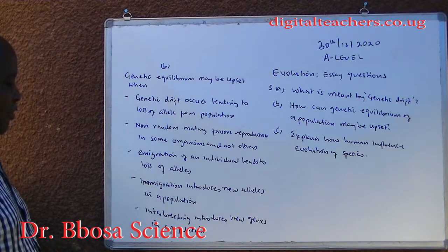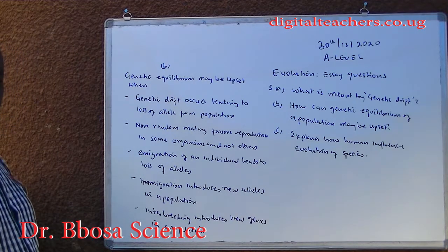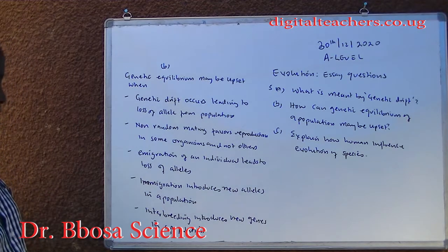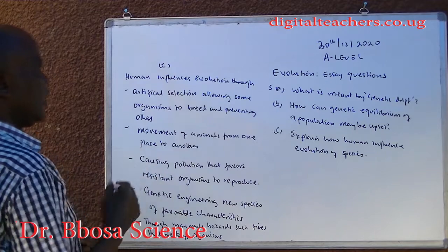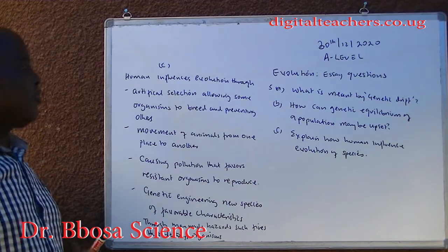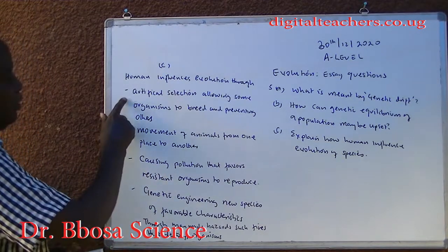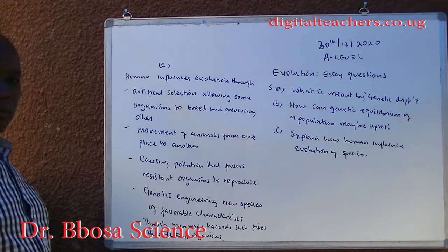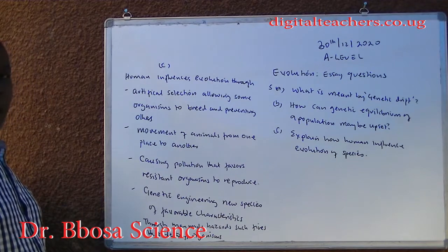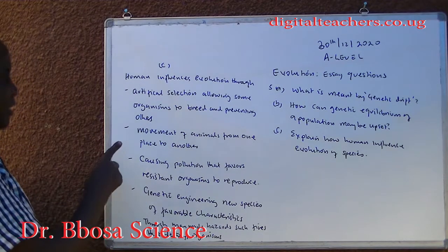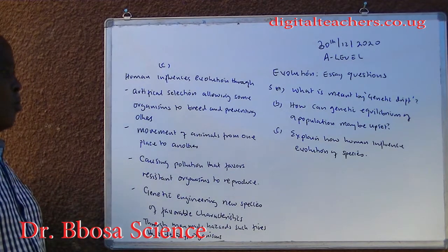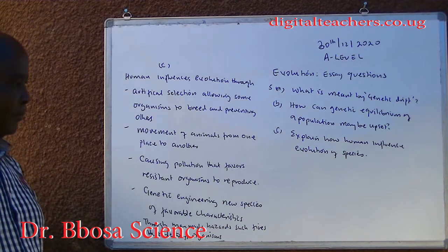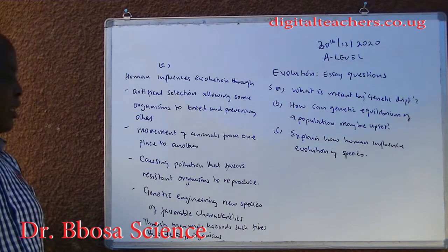Immigration introduces new alleles in a population. Interbreeding introduces new genes in a population. C. Humans influence evolution through artificial selection, allowing some organisms to breed and preventing others; and movement of animals from one place to another, allowing genetic mixing.